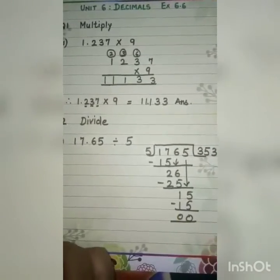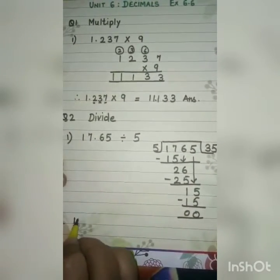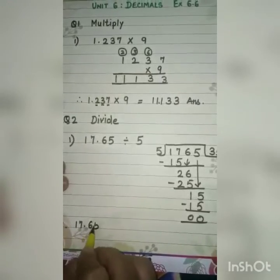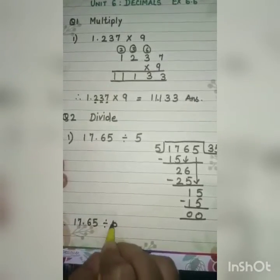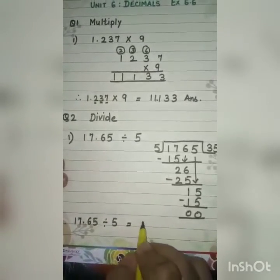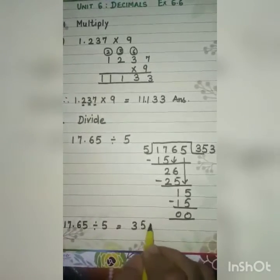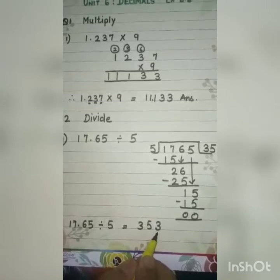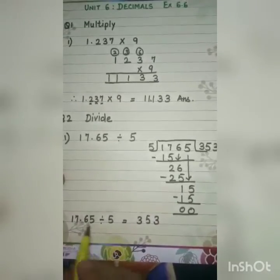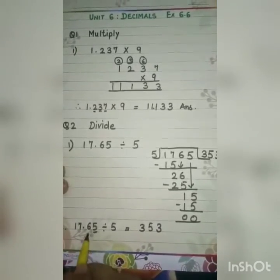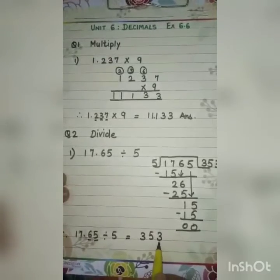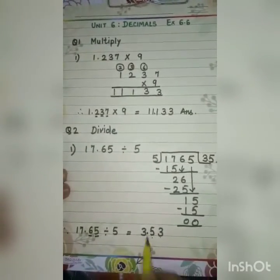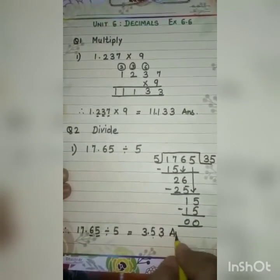So 17.65 divided by 5, the answer is 353. But this is incomplete because we haven't put the decimal. Count from the original number: 1, 2, and in the answer: 1, 2, then put the decimal. So the answer is 3.53.